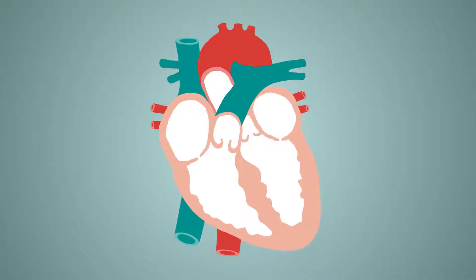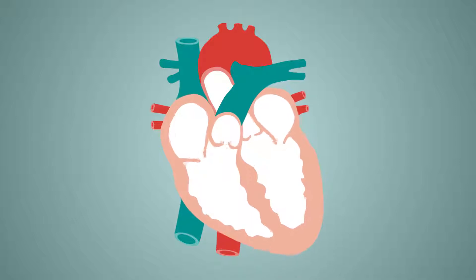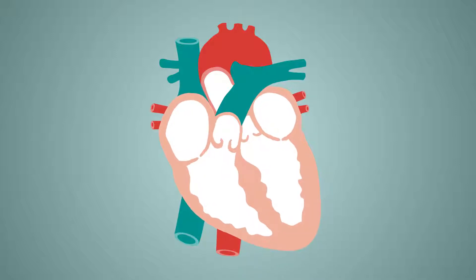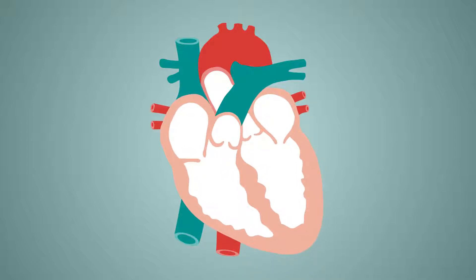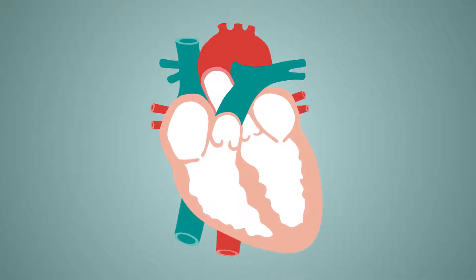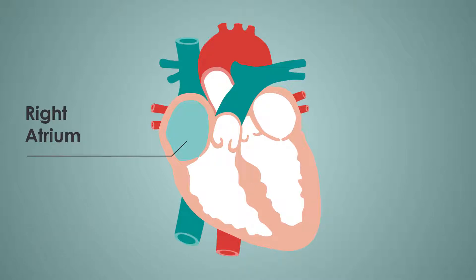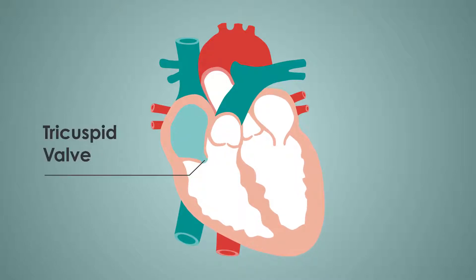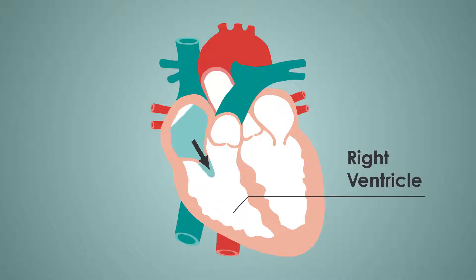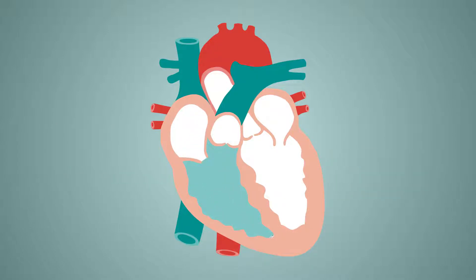The heart acts as the pump which enables blood flow around the body within the systemic and pulmonary circulation. Deoxygenated blood returns from the body to the heart via the superior and inferior vena cava, entering the right atrium. The right atrium contracts, forcing blood through the tricuspid valve and into the right ventricle, following a momentary pause to allow ventricular filling.